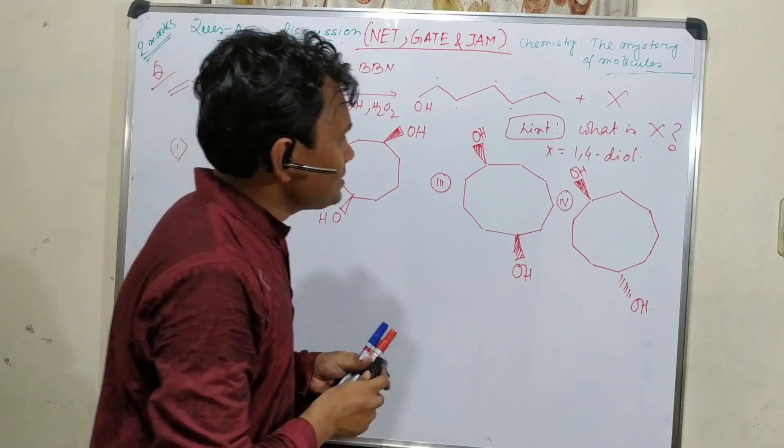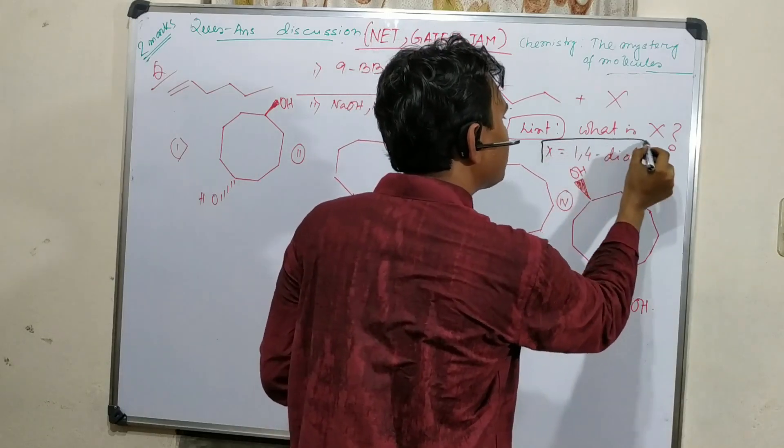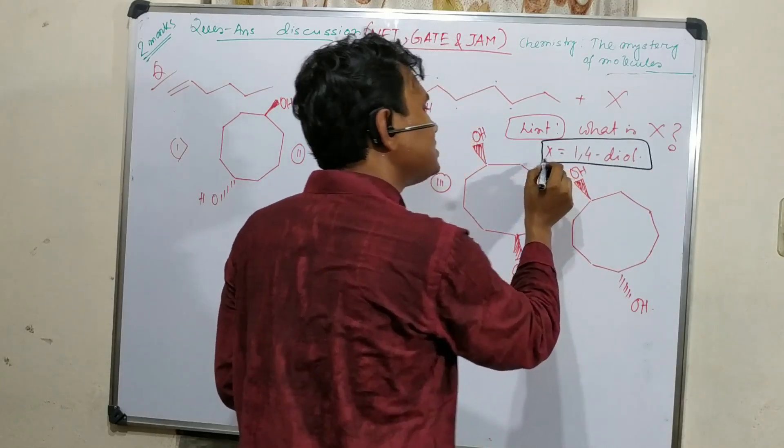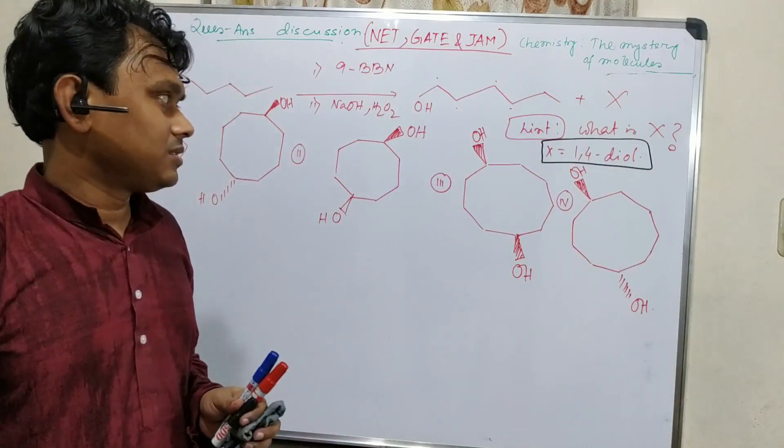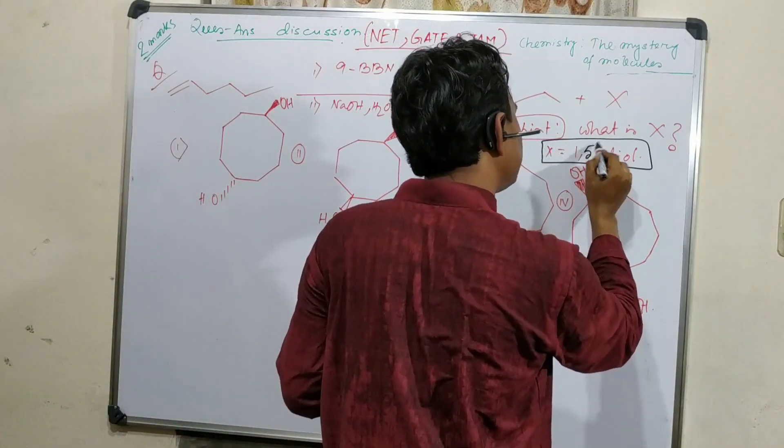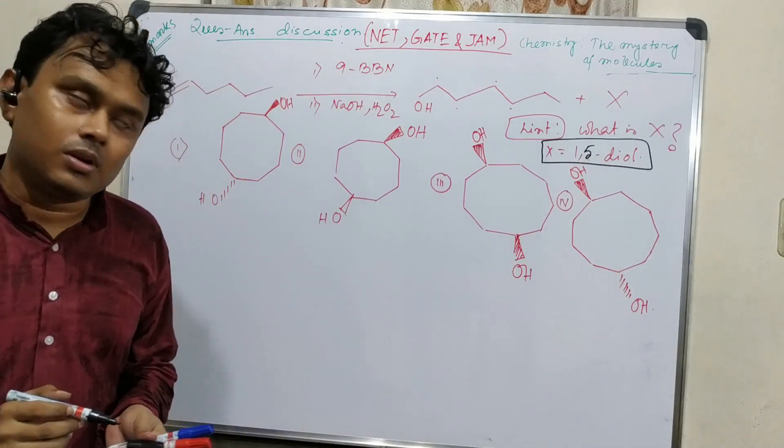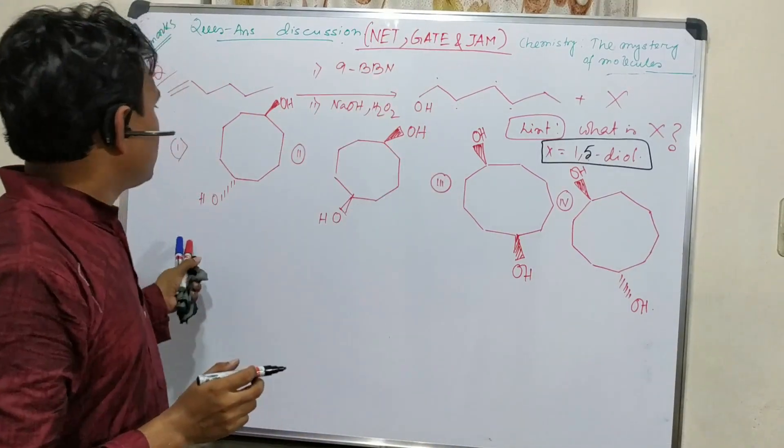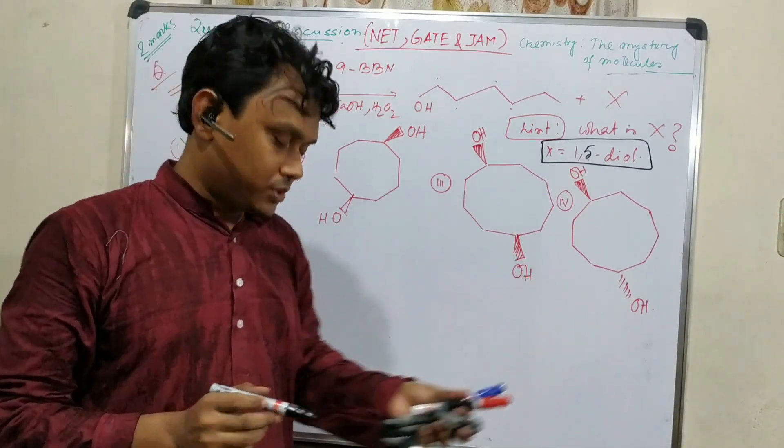The question is what is X. The hint is that X is 1-5-diol. Sorry, I made a mistake - it is 1-5-diol. So you have to find out what is X. Four options are given.